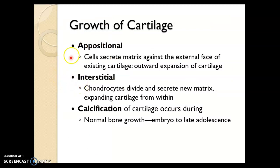There are two types of cartilage growth. Appositional growth is when cells secrete matrix against the external face of the cartilage, meaning the perichondrium — that outer membrane — will secrete cartilage matrix into the space from the outside in. The cells that secrete cartilage matrix are called chondroblasts. Interstitial growth of cartilage is when the chondrocytes divide; when they do that, they become chondroblasts and secrete new matrix from within.